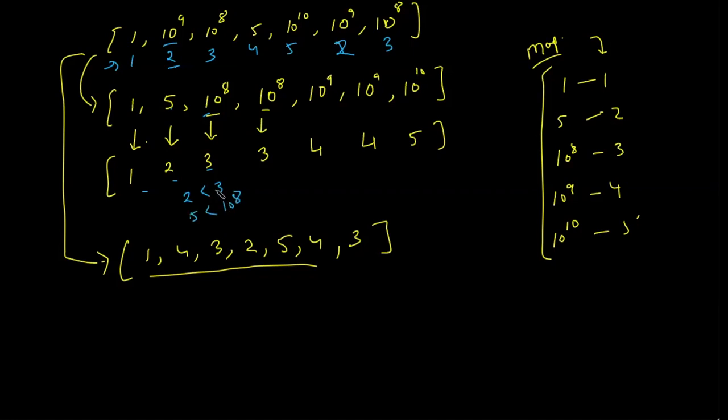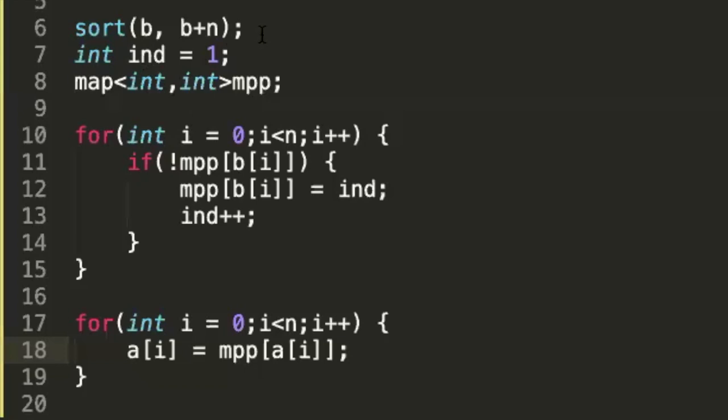So let's see how can we implement this in code. In the code let's assume B is the array which is the duplicate array of A where A is the original array. So we have sorted the B array. And then we have taken the initial index to be 1. And we have also taken a map which stores the mapping of the new number that we are assigning to it.